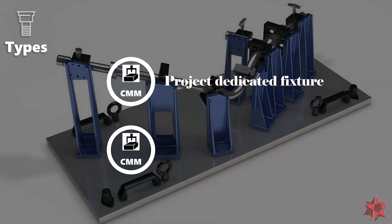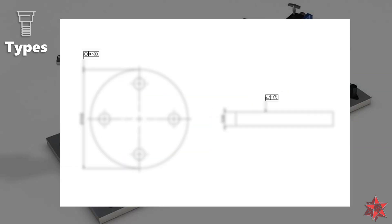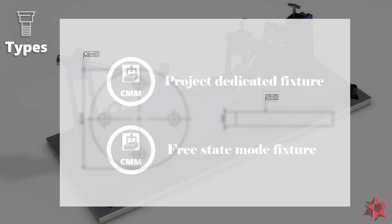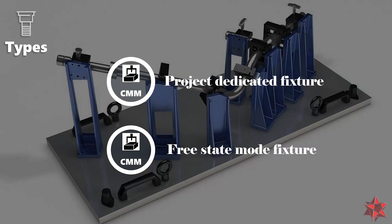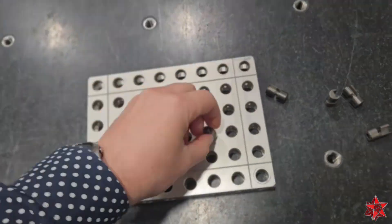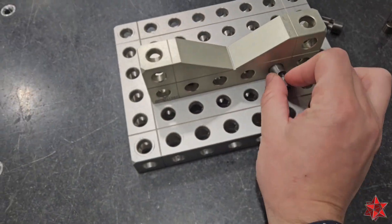The second type of fixtures used for coordinate measurement machines are the ones used in free state mode. Dimensions measured in free state mode are highlighted on the drawing using the F symbol. These types of fixtures can be bought from companies like Mitutoyo, Renishaw which is Rephlex, even Hexagon and Zeiss have their own sets of fixtures for sale. Of course, you can use them also to measure dimensions that are not in free state.